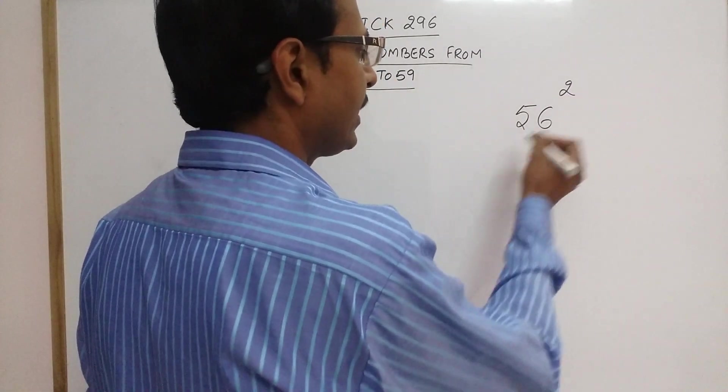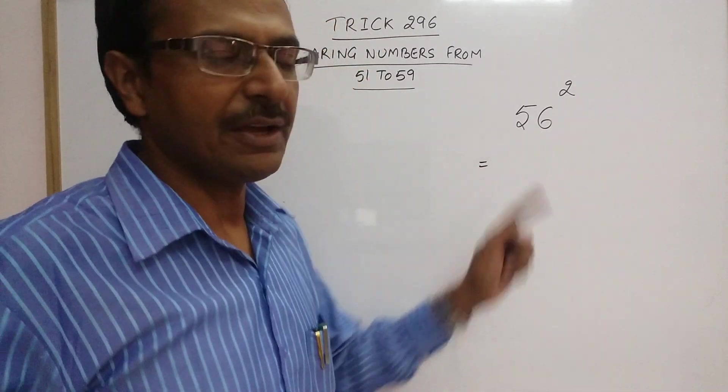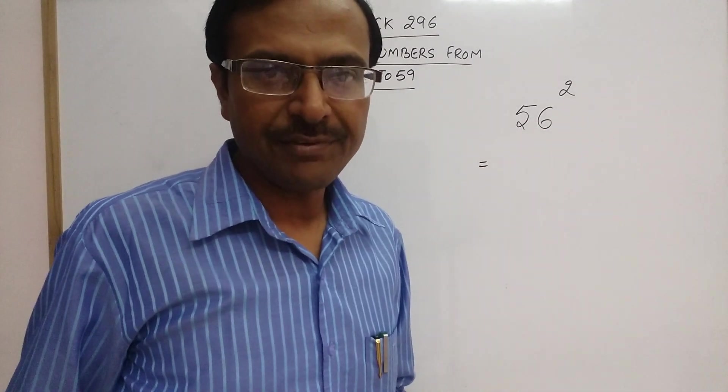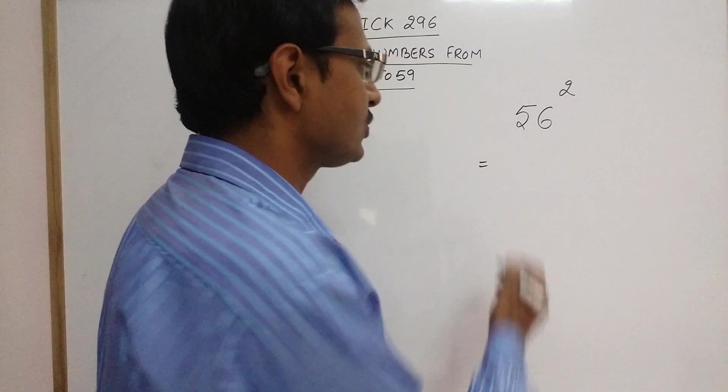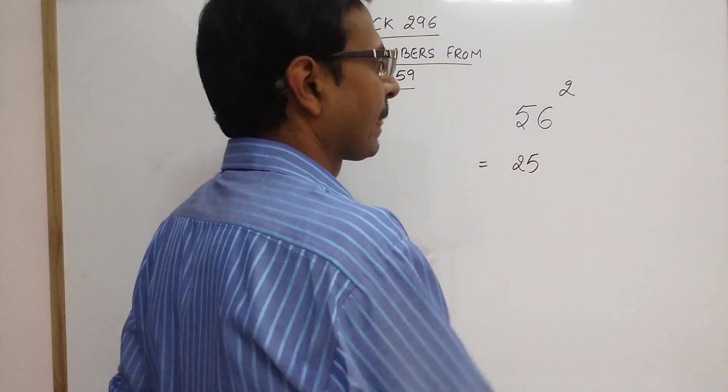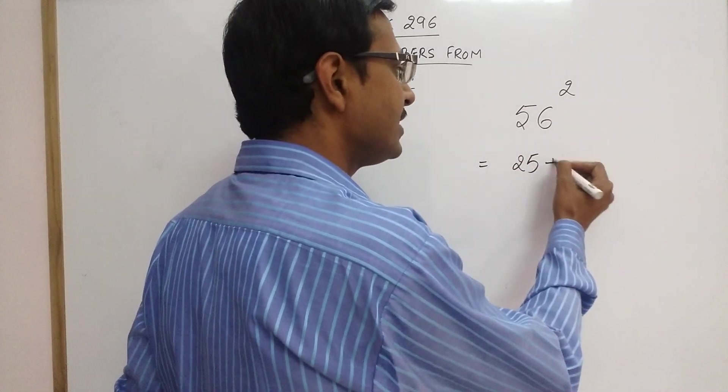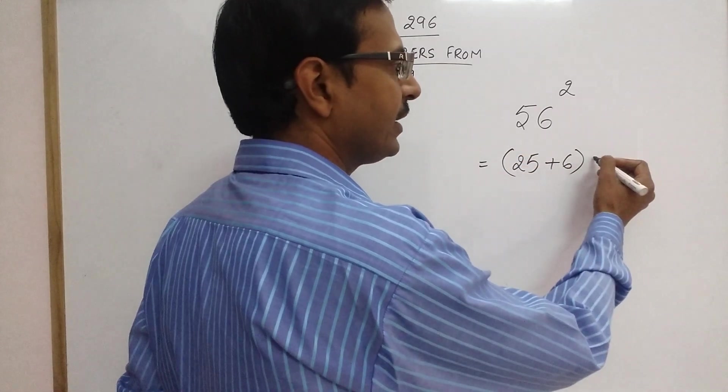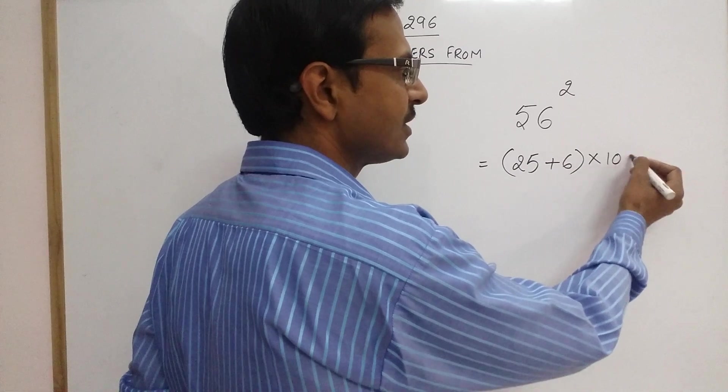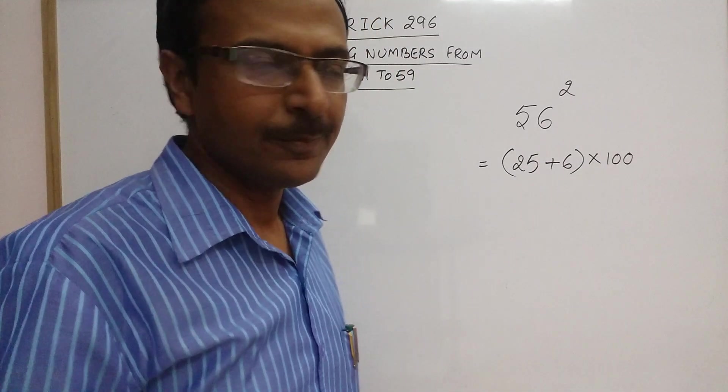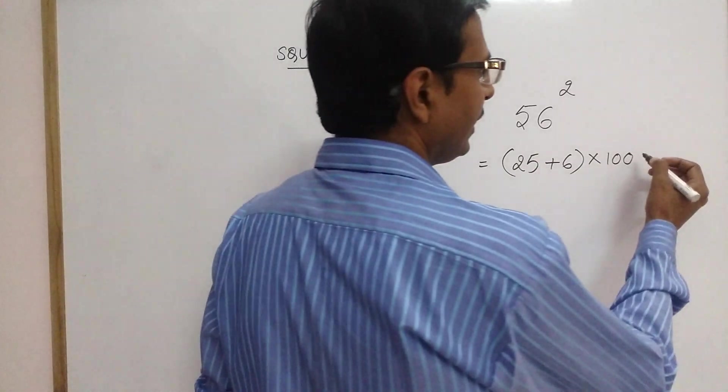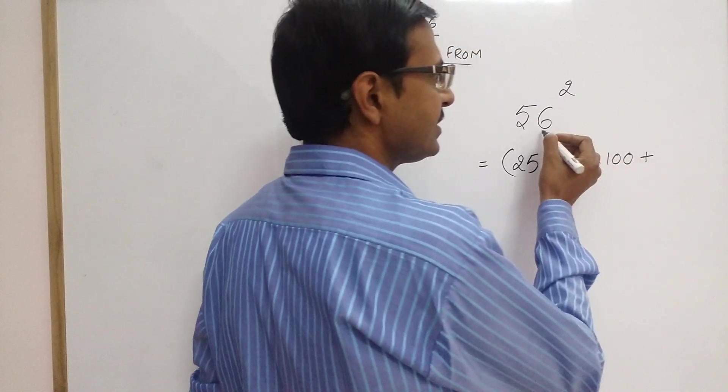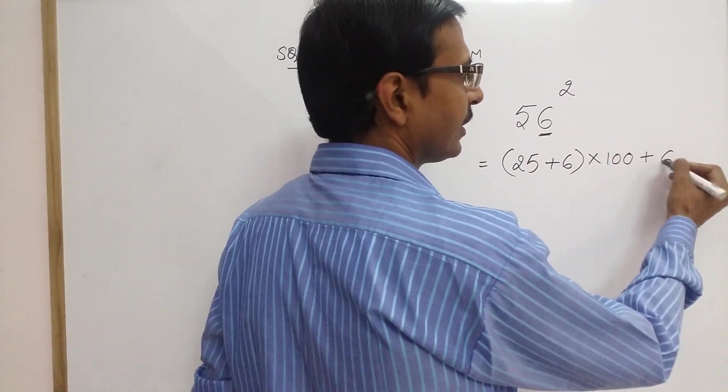When we have to square such numbers starting with 5, what is the square of 5? It is 25. So just write 25. Add this digit 6 to this. Whatever you get, just put two zeros, that is multiply by 100, and add the square of this number.